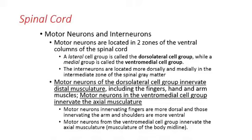These two groups have different functions. One major system is a lateral cell group in the ventral columns of the spinal cord, called the dorsolateral cell group. The medial group is called the ventromedial. The motor neurons of the dorsolateral cell group innervate distal musculature — things like your toes, fingers, and hands — distal meaning far away from your trunk. Motor neurons in the ventromedial cell group innervate the medial part of the body, the axial musculature, the trunk.